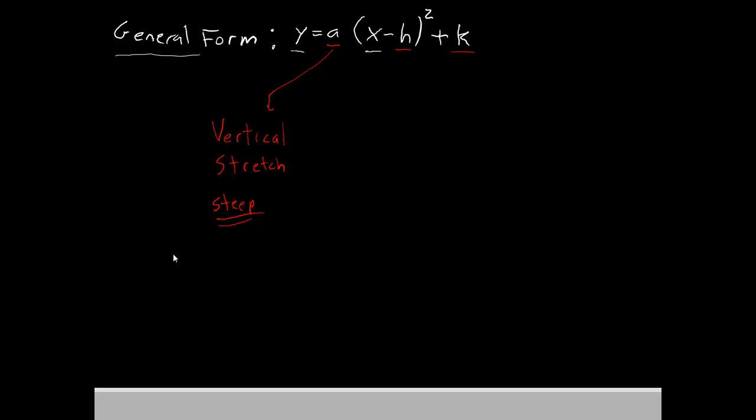Now, this number can also change the direction of the parabola. If a is positive, that means the parabola opens up. And if a is negative, the parabola will open down.